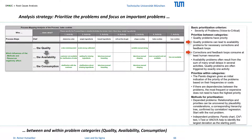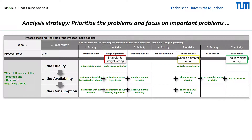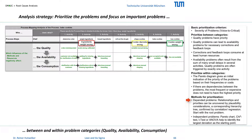Solving the quality problem would thus increase the availability and decrease the consumption of human resources. The same applies to all other error corrections. These problems are therefore interdependent. However, solving the quality problem alone does not lead to a complete solution of the availability or resource problem. Availability problems often result from the sum of many small delays in several activities, while quality problems are often triggered by exactly one activity.